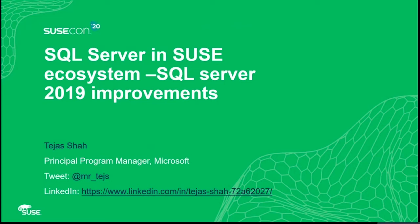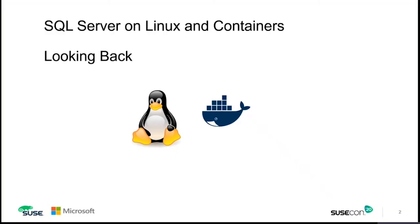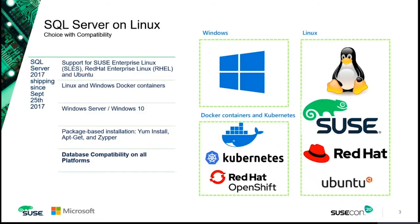Today, I'm going to talk about SQL Server on Linux and specifically the ecosystem, and especially the SQL Server 2019 improvements. Before we go forward, it's typically good to take a look back at what has been available. SQL Server 2017 has been shipping on Linux platform since September 2017. That means we have supported SQL Server running on SUSE Enterprise Linux platform, among other Linux operating systems, along with Windows operating system since September 2017. We also support SQL Server running in Linux container formats in production as well.